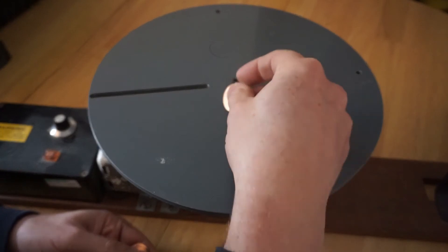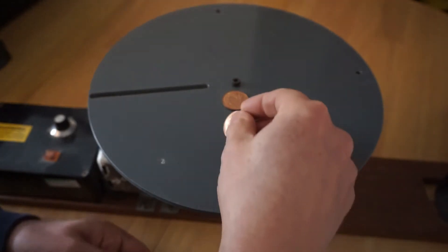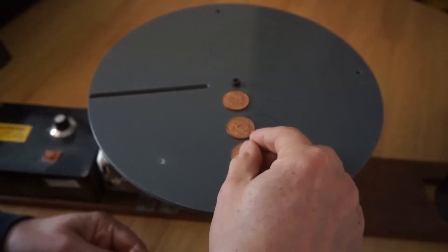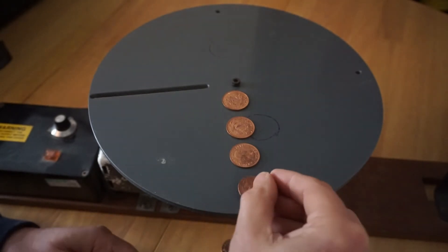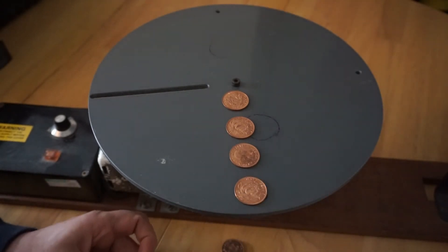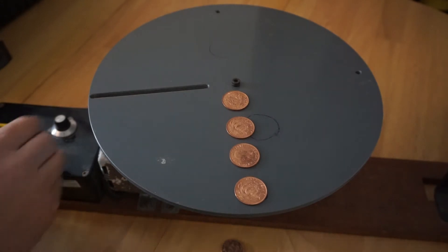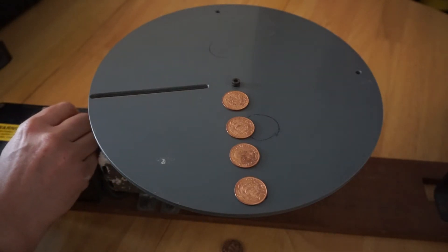I'm going to place four coins along the radius of this circular turntable. I'm now going to set the turntable into motion, gradually increasing its angular speed. And I want you to watch and see what happens to the coins.